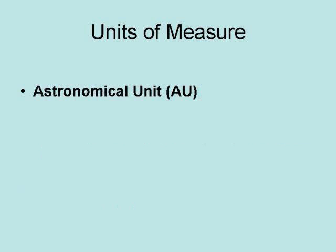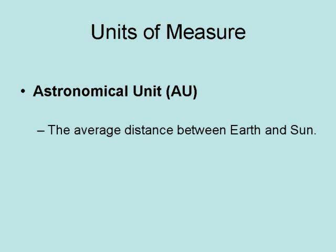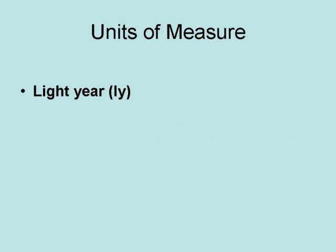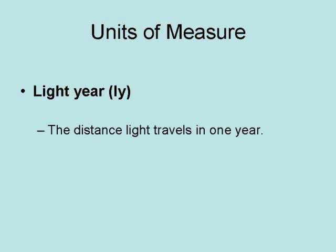Next, we have the astronomical unit. It is the average distance between the Earth and the Sun. One astronomical unit equals 149,598,000 kilometers.